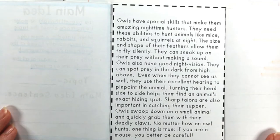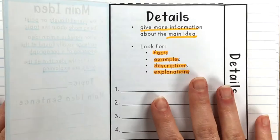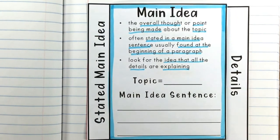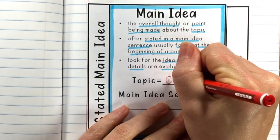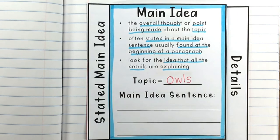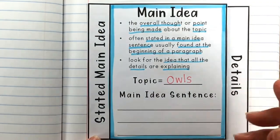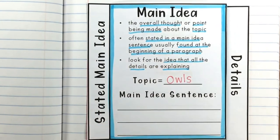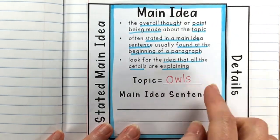Now that we have read this passage, we are ready to talk about main idea and details. First, we're going to think about the topic. This whole paragraph was about one thing — owls. The topic is just one or maybe two words; it's not telling me what I'm saying about owls, just that owls are what the paragraph is about. To figure out the main idea, we've got to find the overall thought and see what the details are telling us to find the specific main idea about owls.